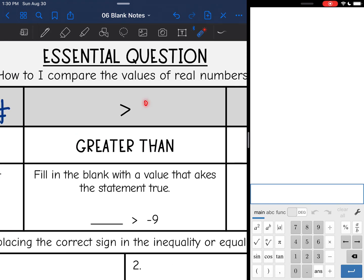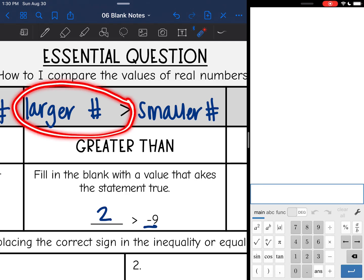Our next symbol is this one right here, which is the greater than symbol. So it says fill in the blank with a value that makes the statement true. And I need something that is larger than negative nine. So since this is a negative number, I know anything positive such as positive two will be greater than that. So with our greater than symbol, our larger number is on the right. And the smaller number is on the left. And again, you want to remember the alligator wants to eat the larger number.